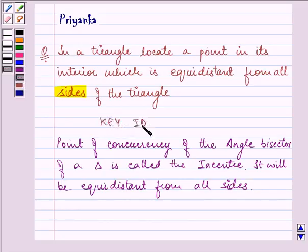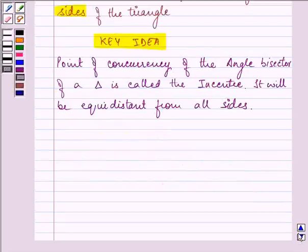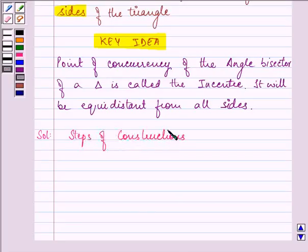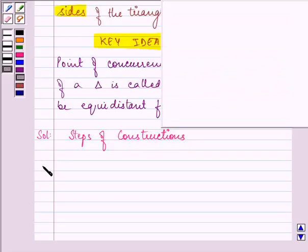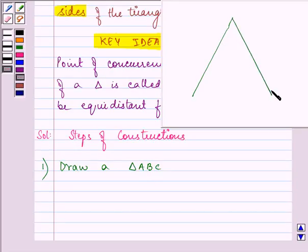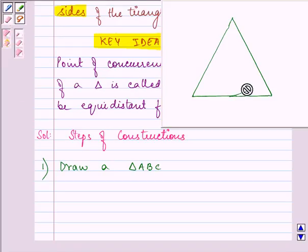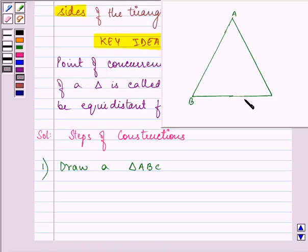Let us proceed with our steps of construction. The first step is to draw a triangle ABC. Let us draw triangle ABC.